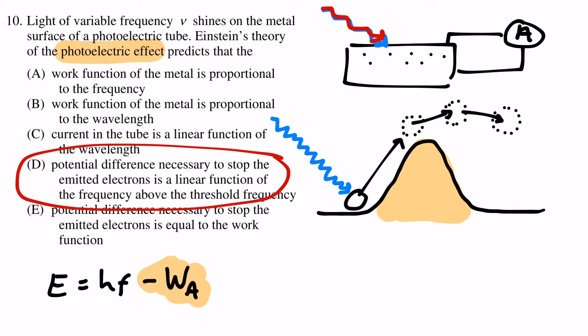This means answer D is the correct one. The energy needed to stop an emitted electron is a linear function of the frequency if we are above the threshold of the work function.